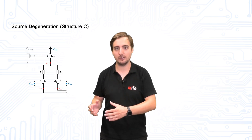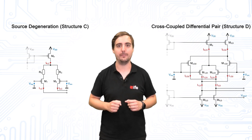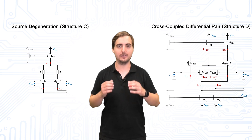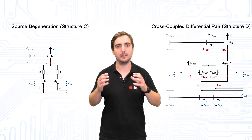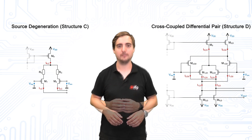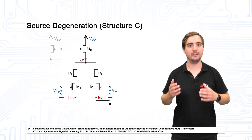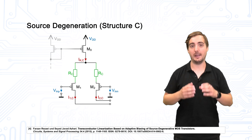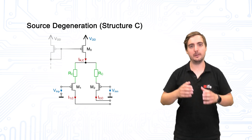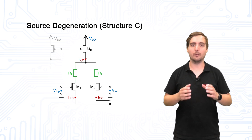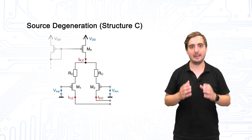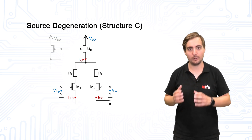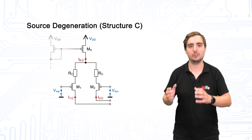For the linearization concept we use two methods to make the differential input pair more linear: source degeneration and using a cross-coupled differential pair. By both methods the transconductance of the transistors is flattened around their operating point, but also lowered. A simple way of linearizing the input stage is to add a resistor to each of the source terminals of the input transistors. As a trade-off between a high and a preferably linear transconductance, a resistor size of 1 kilohm is used. For the layout, we use matched resistors and add them to the reference structure.